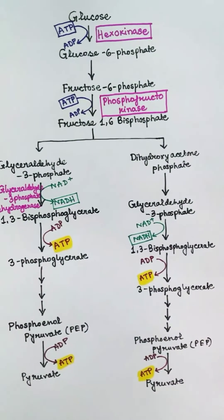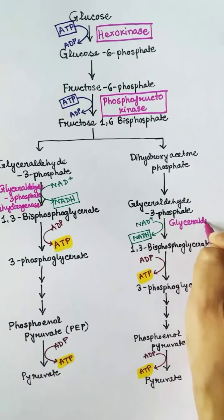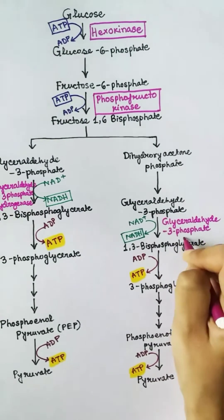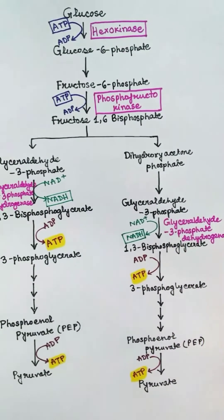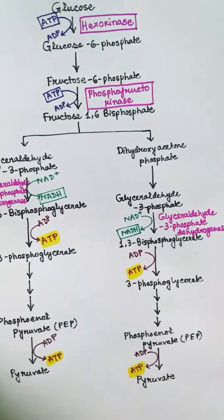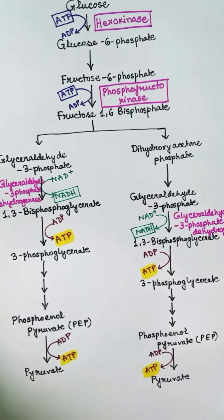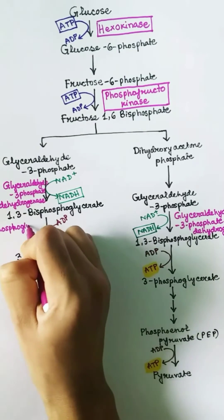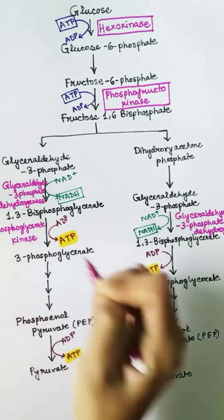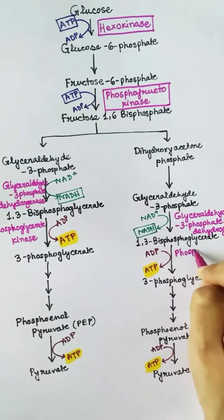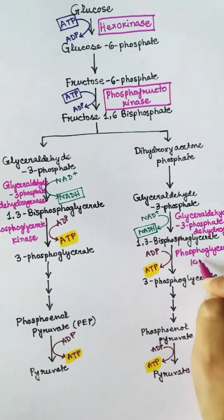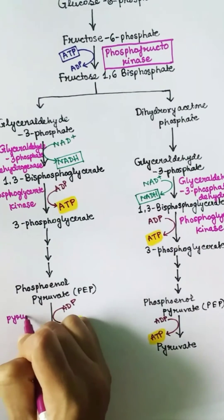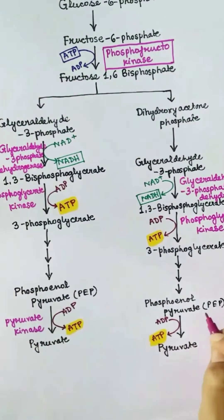Glyceraldehyde-3-phosphate dehydrogenase is involved in both cases of NADH production. For the first ATP production — the conversion of 1,3-bisphosphoglycerate to 3-phosphoglycerate — the enzyme is phosphoglycerate kinase, acting on both molecules. For the conversion of phosphoenolpyruvate to pyruvate, the enzyme is pyruvate kinase.